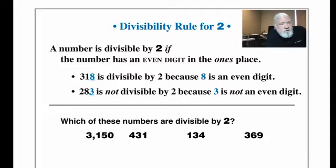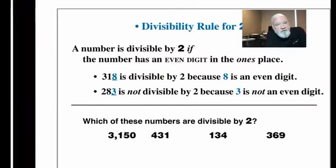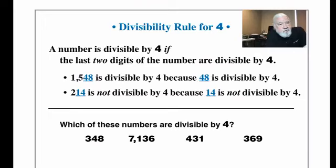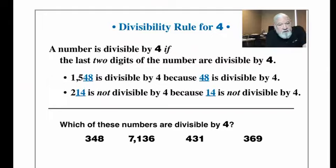We sometimes informally say: if the last digit is even, the number is divisible by two. That idea of the 'last digit' plays into more divisibility rules. For a number to be divisible by four, instead of looking at the last digit, we look at the last two digits. For example, 1548 is divisible by four because 48 is divisible by four — 12 times 4 is 48. Whereas 214 is not divisible by four because 14 is not divisible by four.